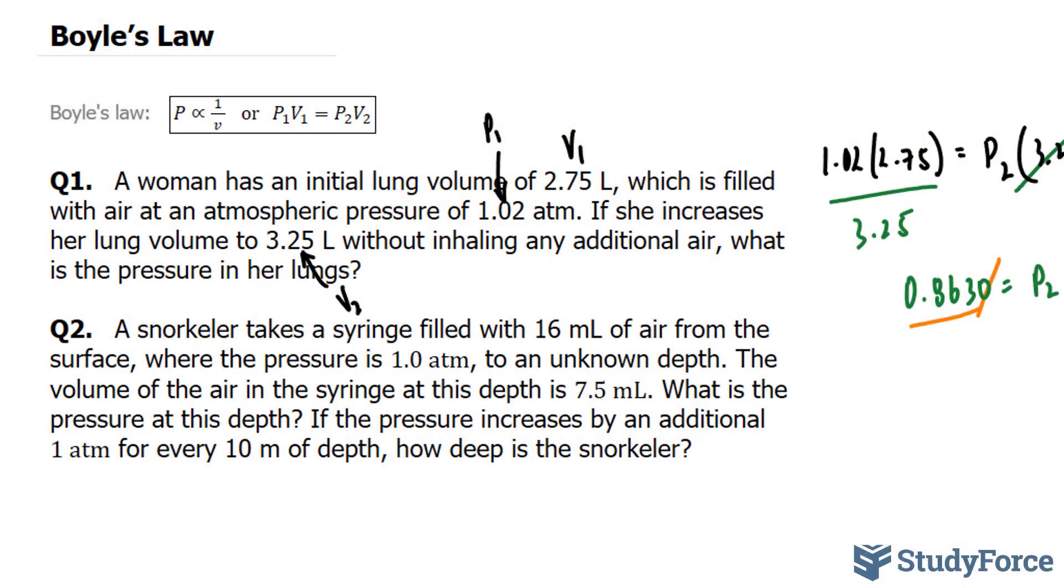In question number two, a snorkeler takes a syringe filled with 16 milliliters of air from the surface, where the pressure is 1.0 atmospheres, to an unknown depth. The volume of the air in the syringe at this depth is 7.5 milliliters. What is the pressure at this depth? If the pressure increases by an additional 1 atm for every 10 meters of depth, how deep is the snorkeler?